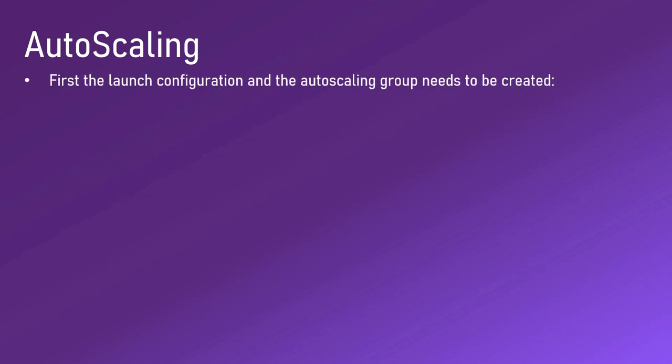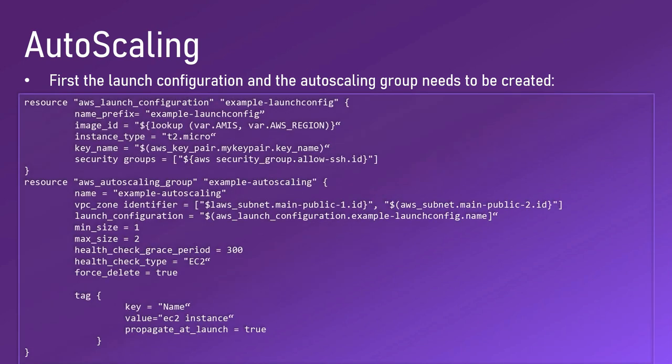To use auto scaling, the launch configuration and the auto scaling group need to be created. Here is an example launch configuration. First we specify a name prefix, in our case 'example-launch-config', then the image ID which is the AMI ID that's going to be launched. It will be the same AMI ID for all instances - so if you have five instances in this auto scaling group, you will have five instances based on the same AMI ID. The instance type in our auto scaling group is t2.micro. Then you specify the key name and the security group.